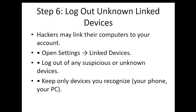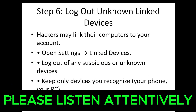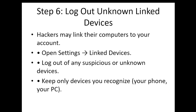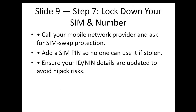Once logged in with two-step verification set, you also need to confirm that no other device is still using your account. It's possible for people to be spying on you because they've linked their device with your account. To check, go to settings and head to Linked Devices. If you see any linked accounts you don't recognize, log them out immediately. Keep only devices you recognize — your phone, PC, or whatever device you use for WhatsApp.